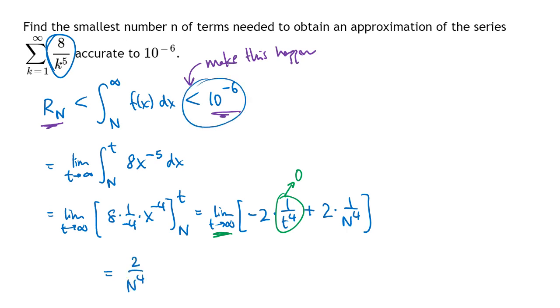And now what I want is to make this happen. So in other words, I want to make that fraction, 2 over N to the 4th, I want to make that less than 10 to the minus 6. So let's do that.